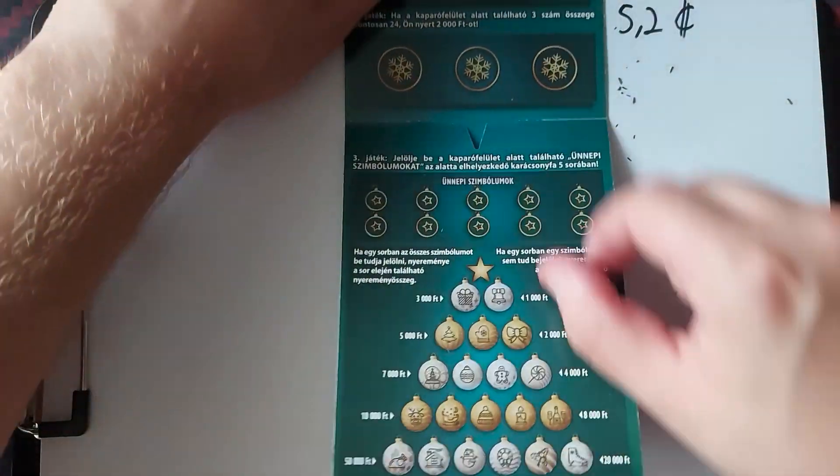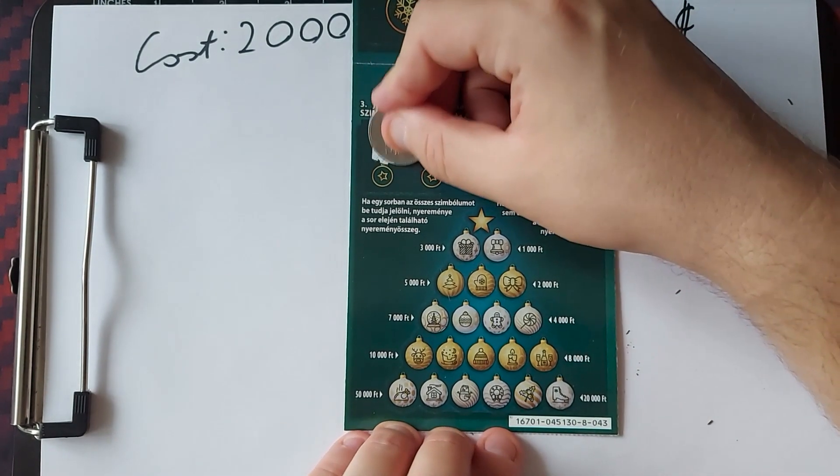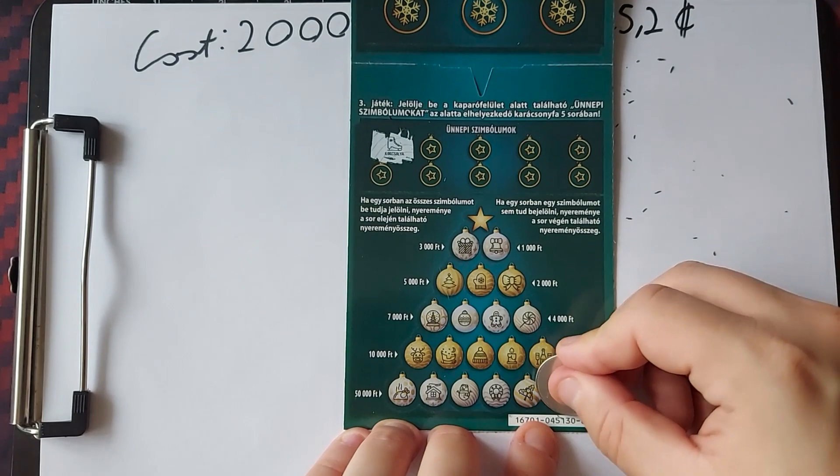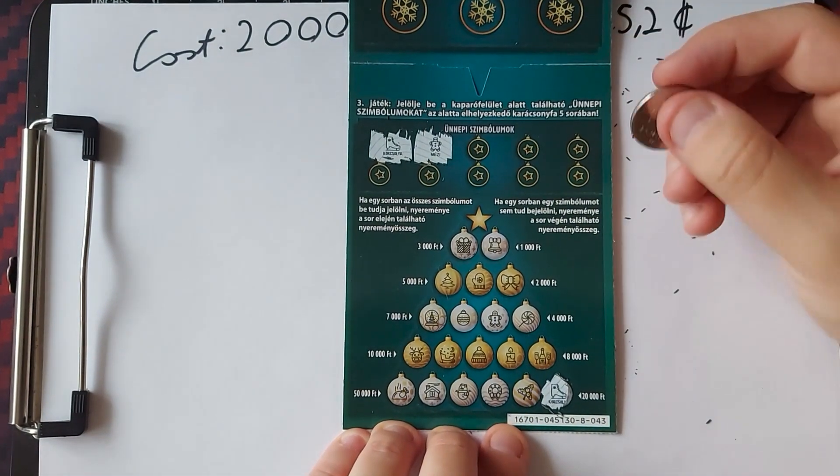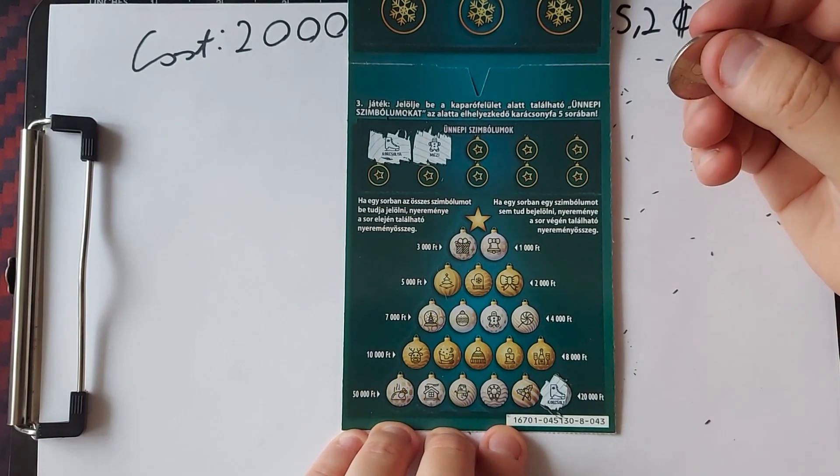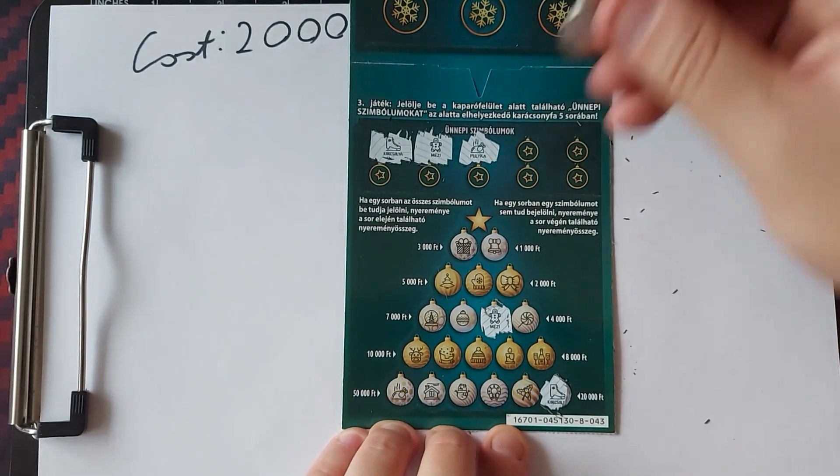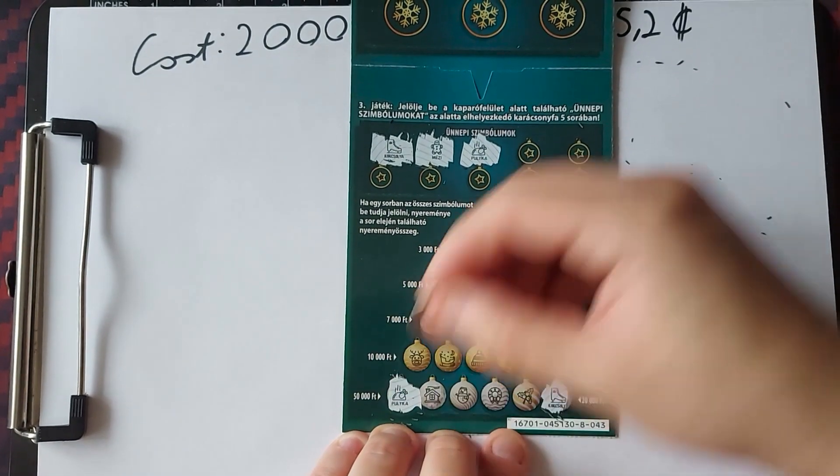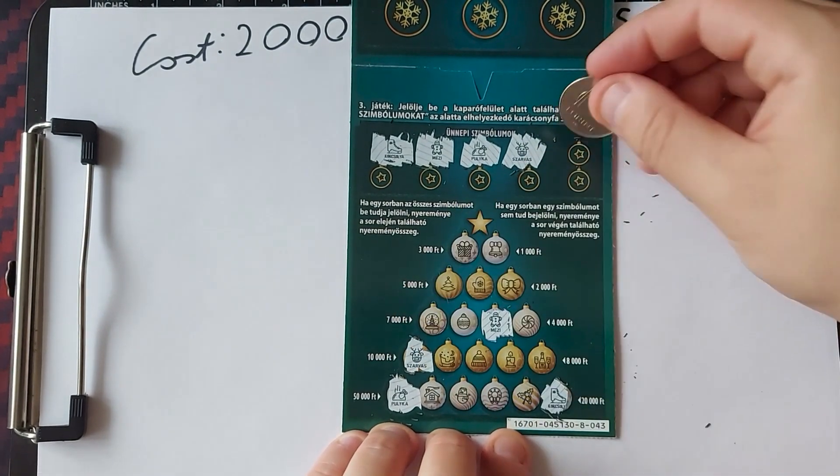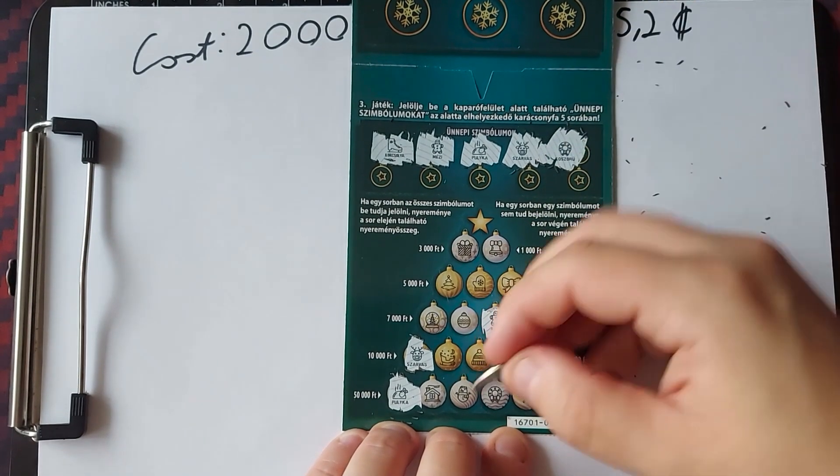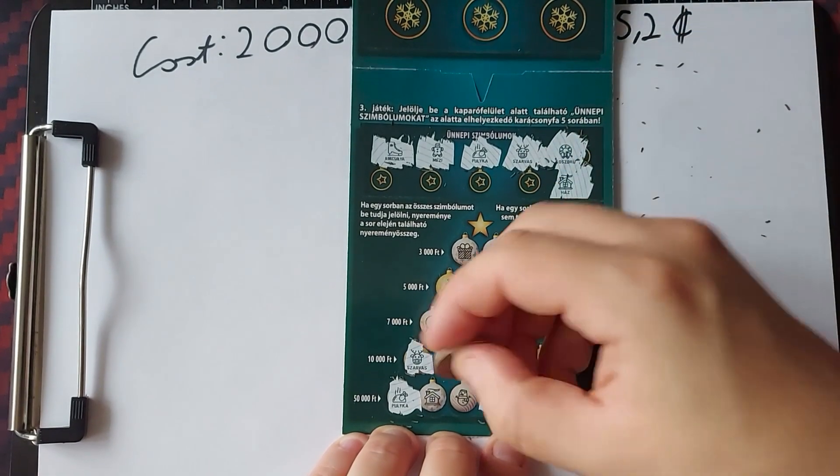I don't like this, I don't like this, okay, start with this one, now, skate, these have the same symbols, and of course, gingerbread, all across them, okay, turkey, reindeer, here, so very boring scratching tickets, in my opinion.